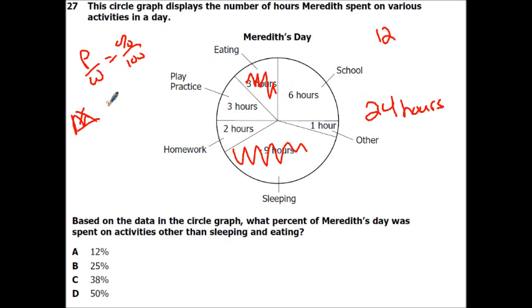So if we didn't know that that was 50, we would just go 12 over 24 equals X over 100. So that would be 24X equals 1,200. Divide by 24. So X would equal 50. So that would be 50%.